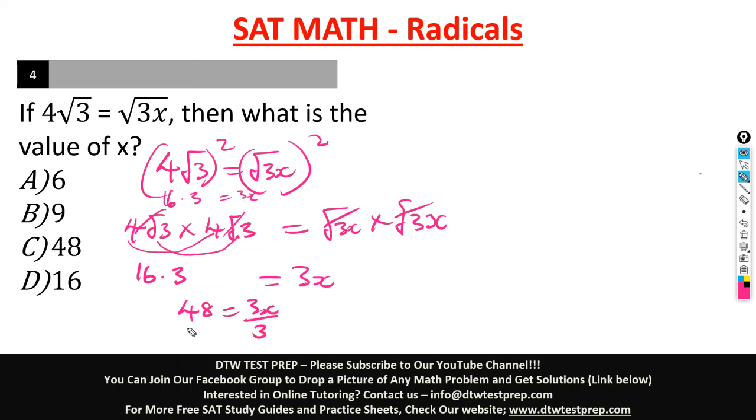So to get x we divide both sides by 3. This would cancel, 48 divided by 3 is 16 equal to x. So our x is equal to 16. So our right option here is option D. Do you see how easy and straightforward it is?